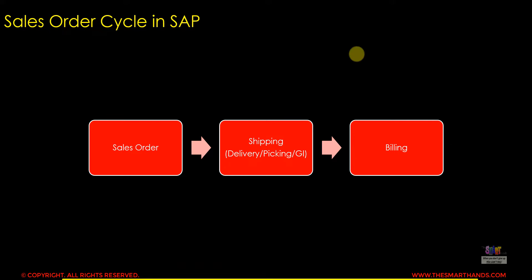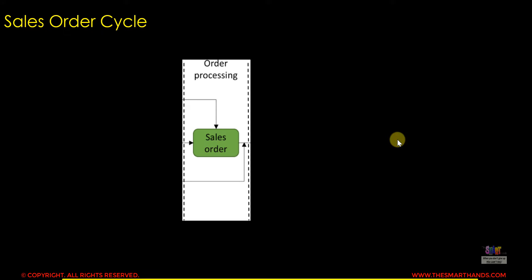From an SAP point of view, in simple terms, we start with creating a sales order. After entering the sales order, we start the shipping process — which involves creating the delivery document, completing the picking process, and then finally goods issue to the customer. After this is done, we create the billing document and send the invoice to the customer.